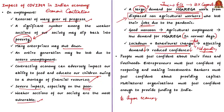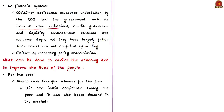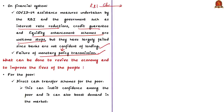People must feel confident about their lives and livelihoods. Entrepreneurs must feel confident about reopening and making investments. Bankers must feel confident about providing capital. Similarly, multilateral organizations must feel confident enough to provide funding to India. When all these sectors feel confident, the economy revives. The authors also note that measures taken by the government and RBI — such as reduction of repo rate, credit guarantee, and liquidity enhancement schemes — are welcome steps but have largely failed since banks are not confident of lending, which represents the failure of monetary policy transmission.